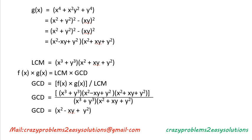Now, using the relationship between LCM and GCD of polynomials: f(x) × g(x) = LCM × GCD. We need to find the GCD, so we keep GCD on the left-hand side and move the remaining values to the right.